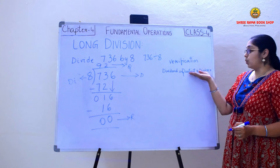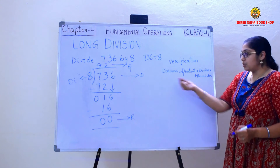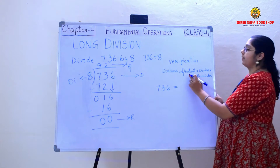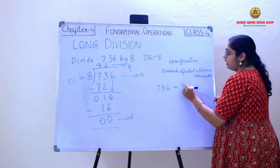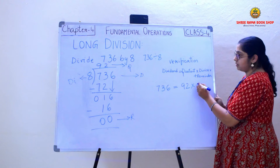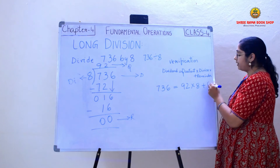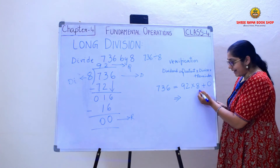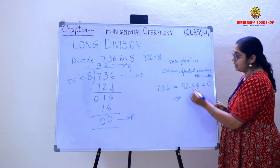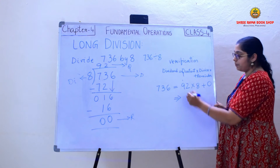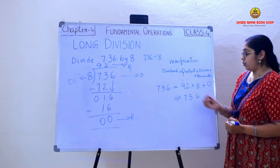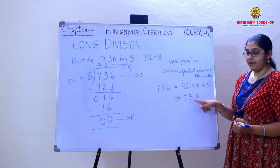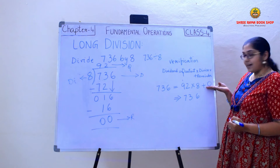Dividend equals quotient into divisor plus remainder. So what is the dividend? It is 736, which should be equal to — quotient is 92, into divisor which is 8, and the remainder is 0. So 8 twos are 16, 1 carry. 9 eights are 72 plus 1 is 73. So when I multiply the quotient and the divisor, which is 92 into 8, I am getting the product as 736. I am not adding anything because the remainder is 0.